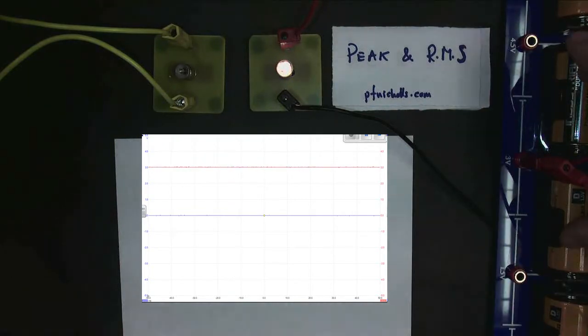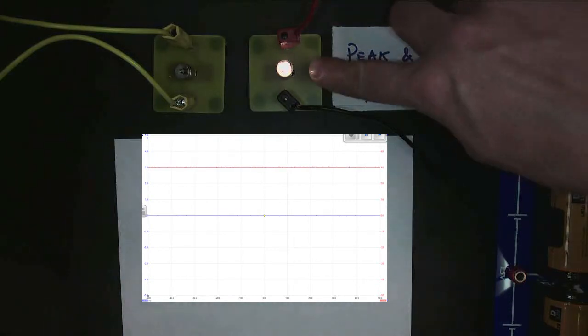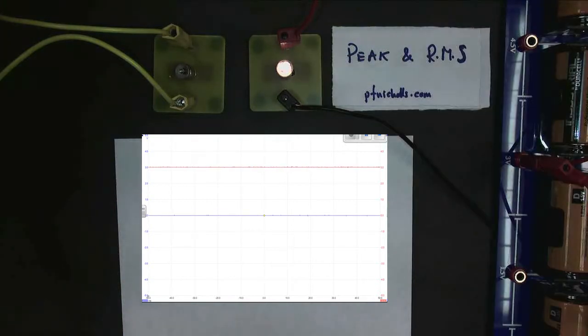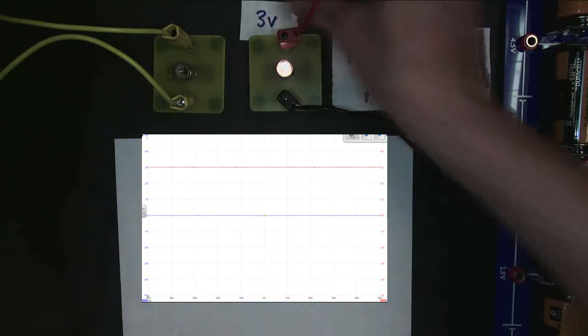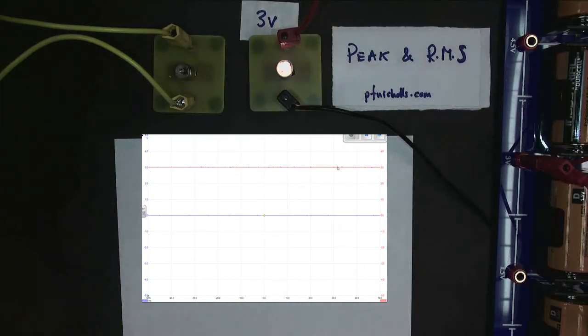I have here a battery pack and I'm using it to make this bulb light up with DC. I set it to be almost exactly three volts. We can see that on the oscilloscope screen, three volts.